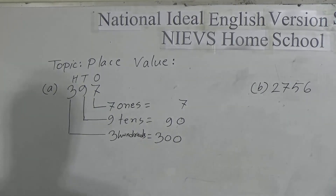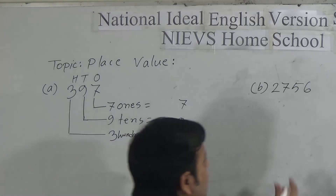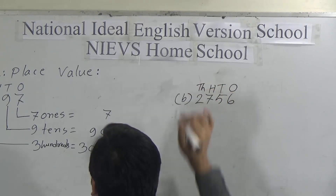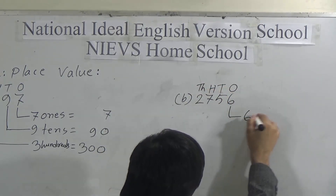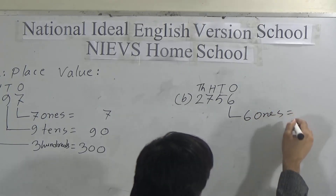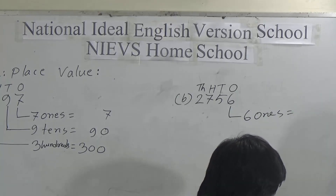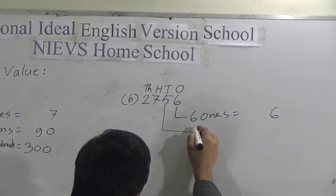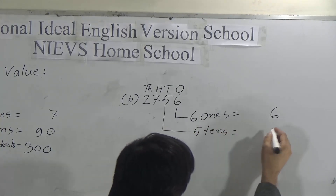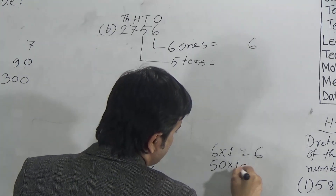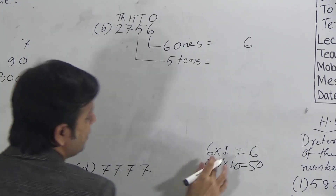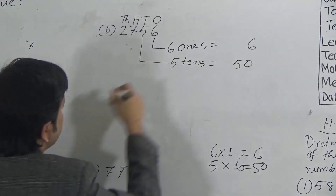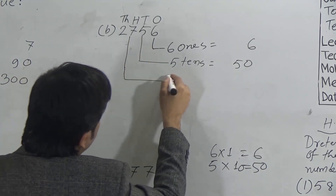Now the second number is b: two thousand seven hundred fifty-six. Indicate the positions of the digits: ones, tens, hundreds, thousands. Six is in ones position — six ones means multiply six by one, which equals six. Five is in tens position — five tens means multiply five by ten, which equals fifty. So the place value of five in this number is fifty.